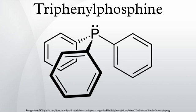In an early application in homogeneous catalysis, NiBr2(PPh3)2 was used by Walter Reppe for the synthesis of acrylate esters from alkynes, carbon monoxide, and alcohols. Wilkinson's further popularized the use of PPh3, including the then-revolutionary hydroformylation catalyst RhH(PPh3)2(CO)2.